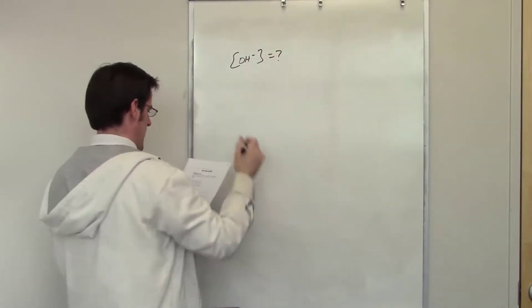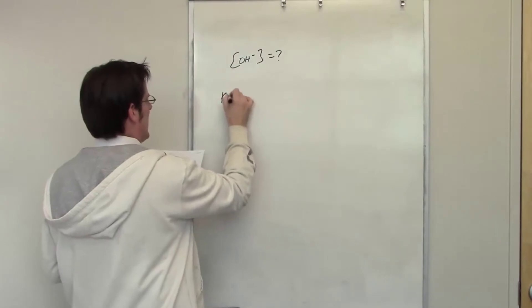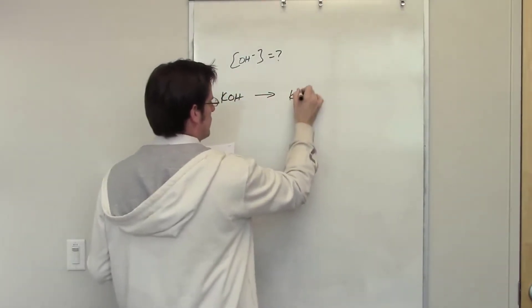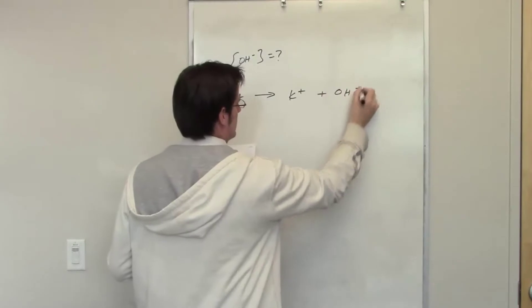That's formed when we add 5 mL when we've got KOH. KOH of course is going to dissociate to form potassium and hydroxide ions like that.